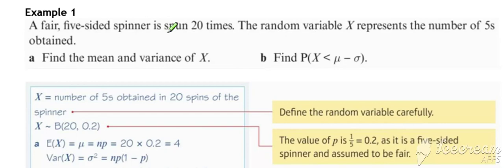So we'll start by just reminding ourselves of an example of that calculation. Here we've got a five-sided spinner spun 20 times and X represents the number of fives obtained.